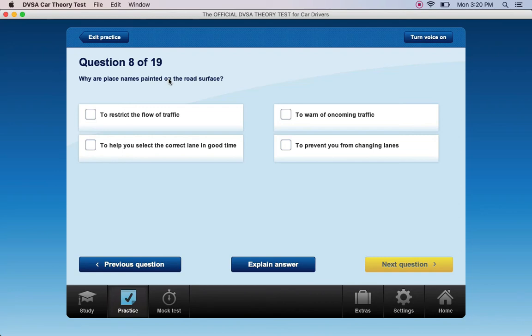Why are place names painted on the road surface? To restrict the flow of traffic. To warn of oncoming traffic. To help you select the correct lane in good time. To prevent you from changing lanes. To help you select the correct lane in good time.